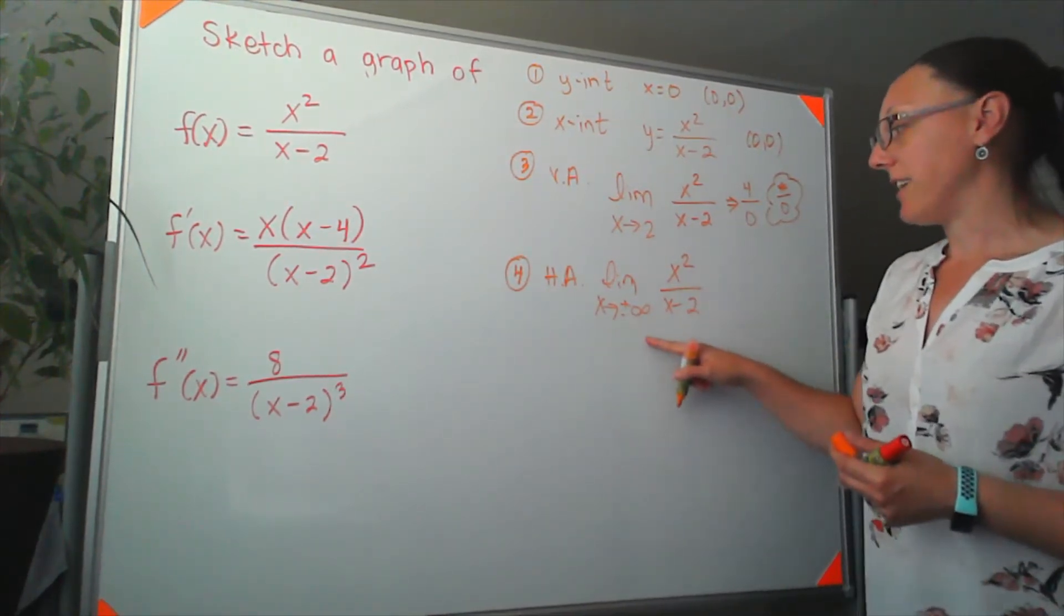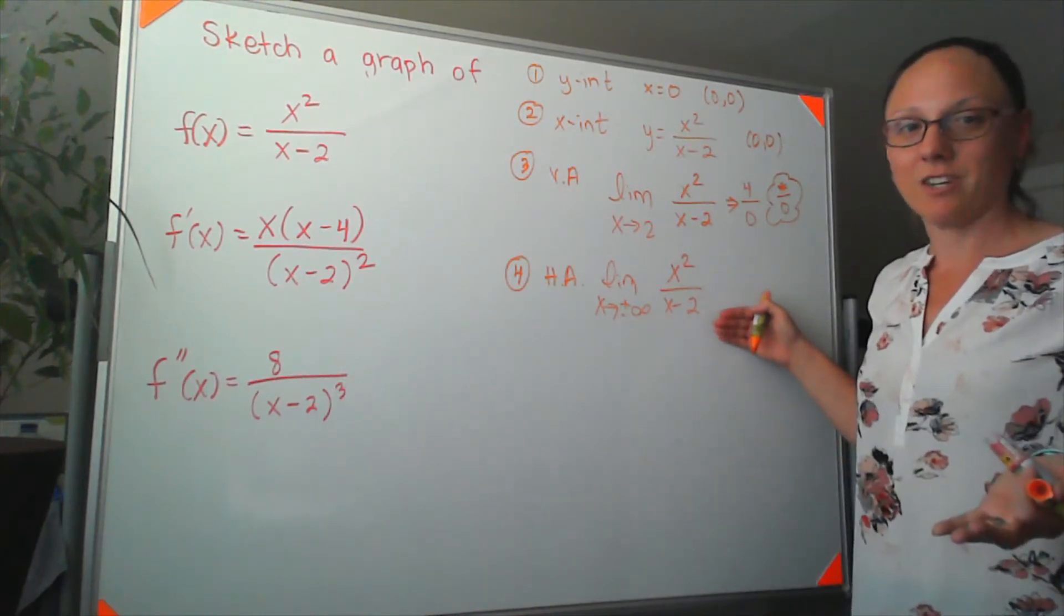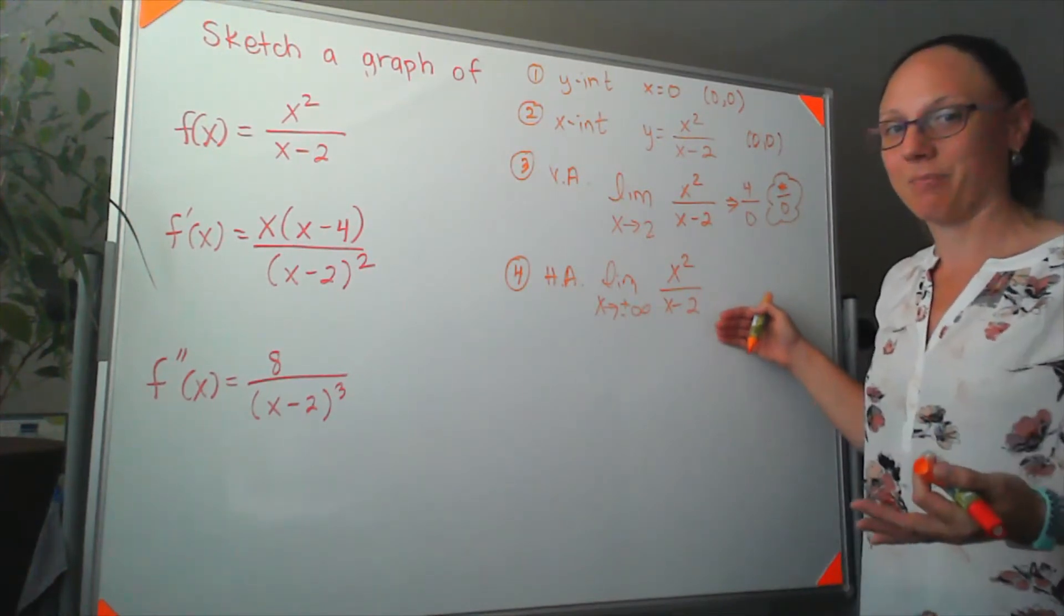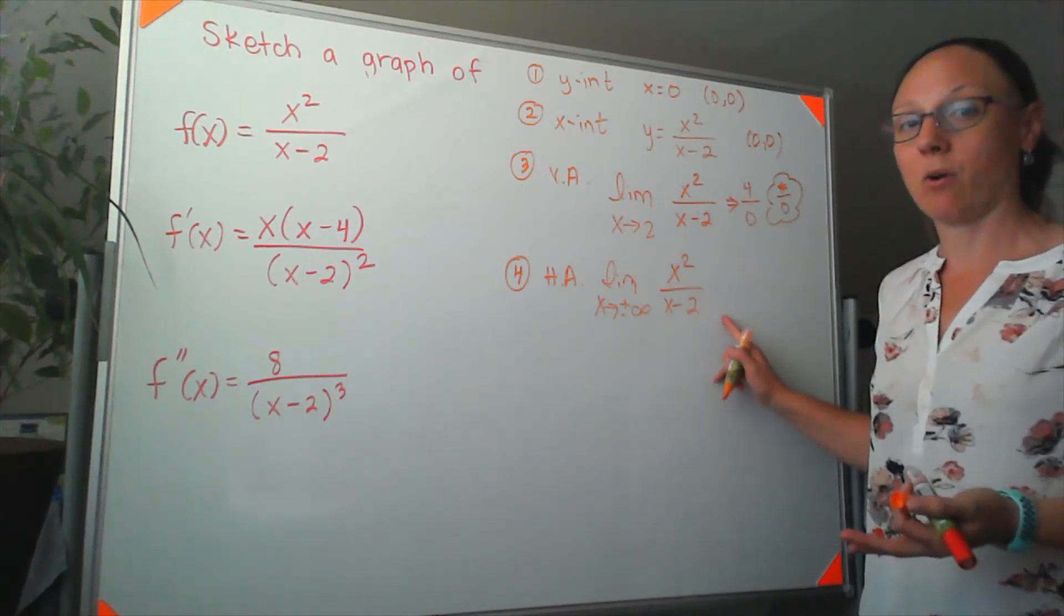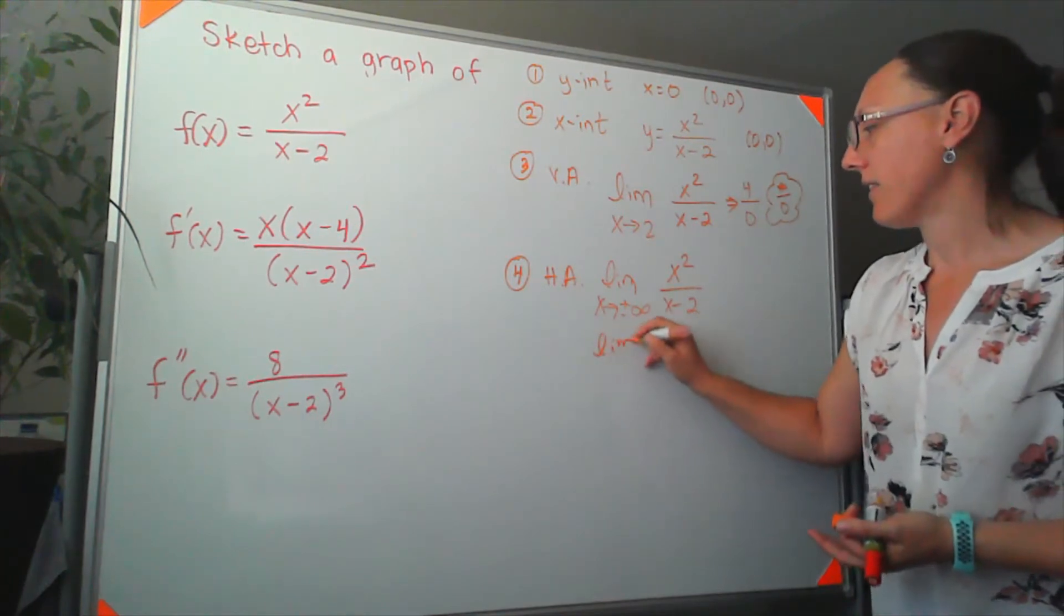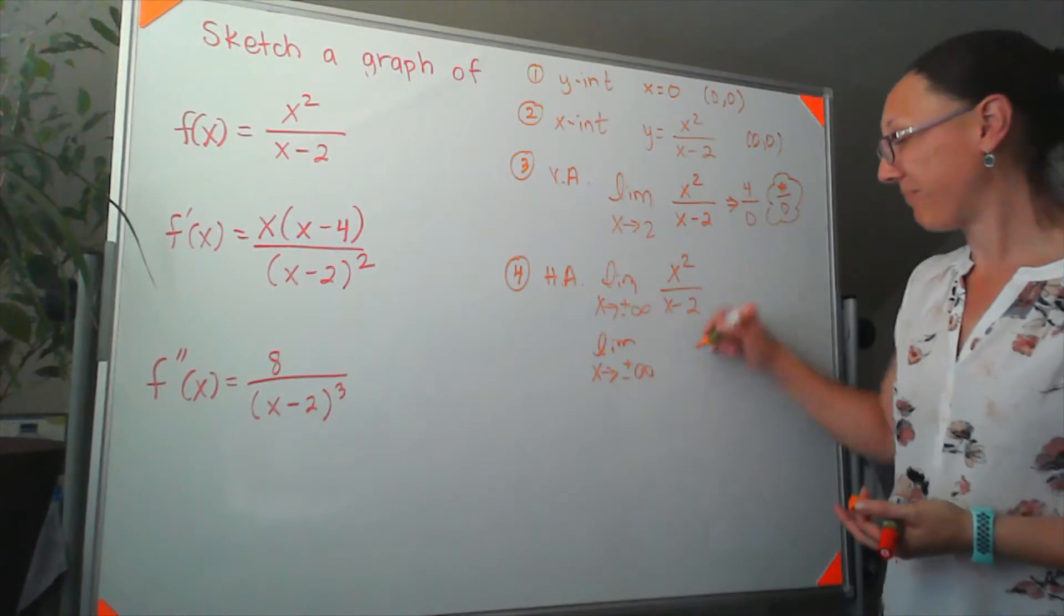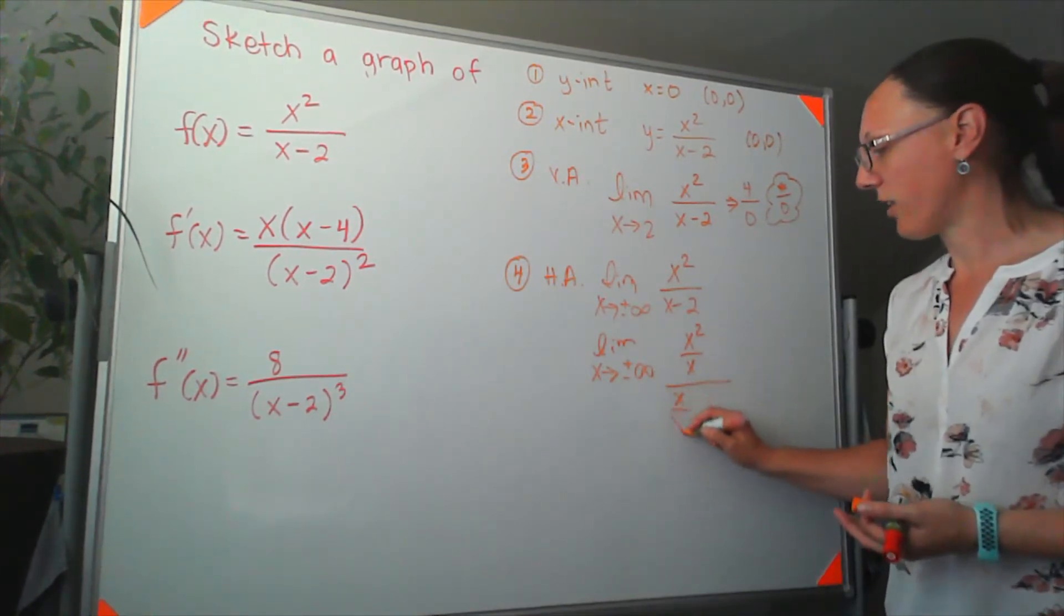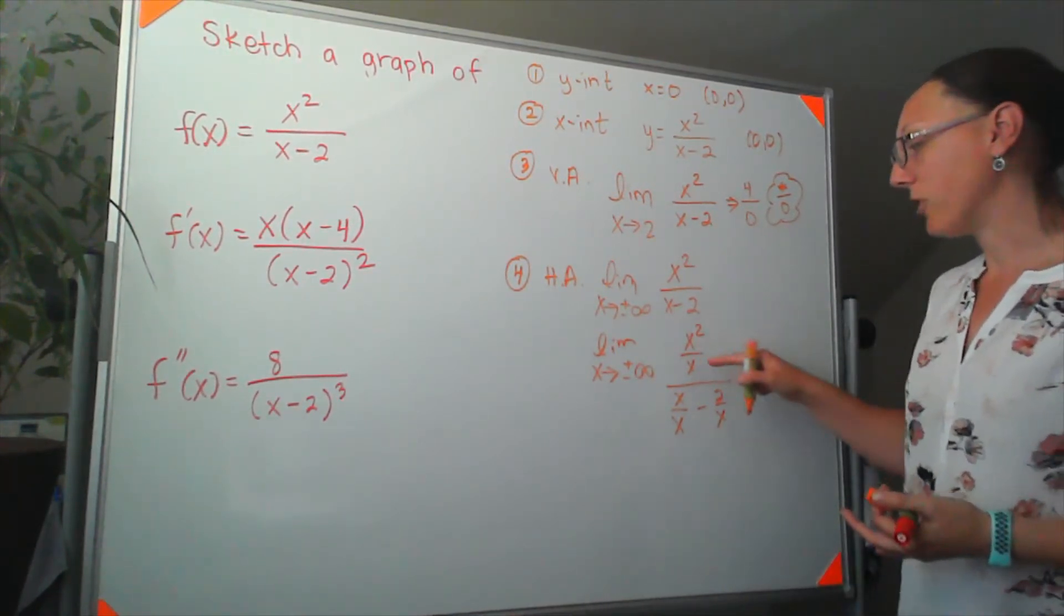Well, if I plug infinity in, I get infinity divided by infinity, which is another one of those indeterminate forms. But infinity over infinity is telling me to go do some algebra. And in this case, the algebra I want to do is to divide everything by the largest power of x in the denominator. So I am instead going to look at the limit as x approaches positive or negative infinity of x squared over x, x over x, and 2 over x.